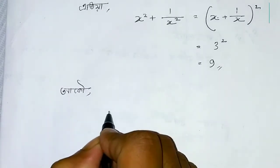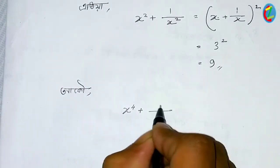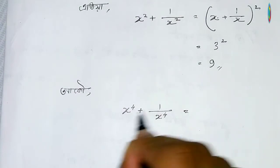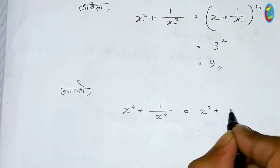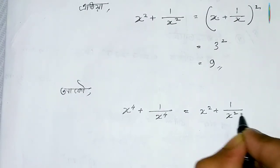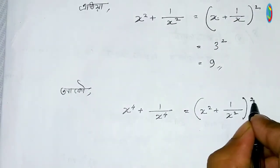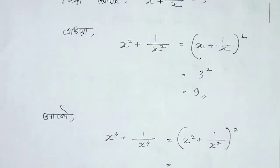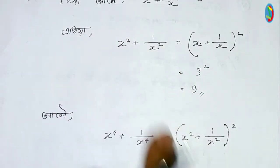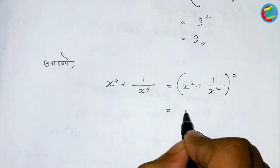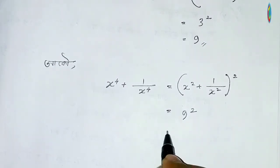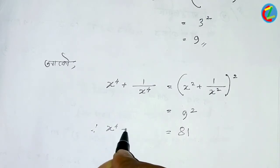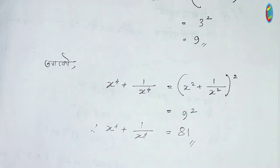Now we need x to the power 4 plus 1 by x to the power 4. We take x squared plus 1 by x squared whole squared, which gives x to the power 4 plus 1 by x to the power 4 plus 2. Since x squared plus 1 by x squared equals 9, squaring gives 81, so x to the power 4 plus 1 by x to the power 4 is equal to 81 minus 2, which is 79.